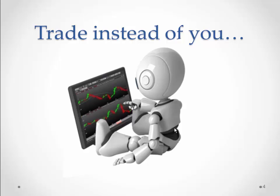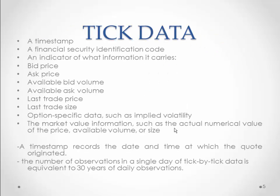Algorithms running on the servers will trade instead of the trader, as per the given instructions of the algorithm. The server is connected so close with an optical cable directly to the exchange that it will receive tick data from the exchange, which has more information than a normal trader gets through the internet — such as bid price, ask price, available bid volume, available ask volume, last traded price, last traded size, and implied volatility. As the data is more accurate and fast, it captures more market opportunities.